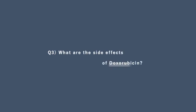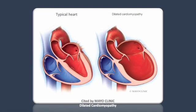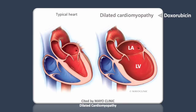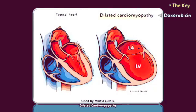What are the side effects of doxorubicin? The notable adverse effect associated with doxorubicin is the development of dilated cardiomyopathy, which can be irreversible. These are critical points that are often tested in various exams.